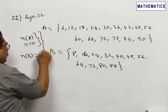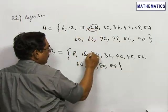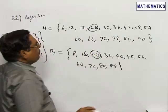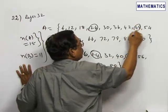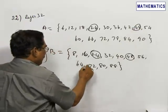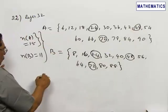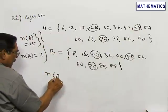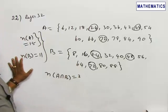The common numbers are: 24 is here and also there, 48 is here and also there, and 72 is here and also there. So n of A intersection B will be equal to 3. There are 3 numbers.